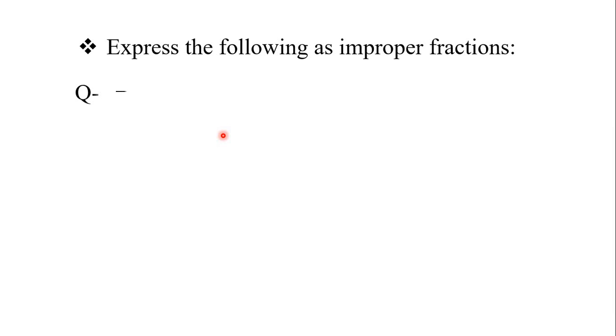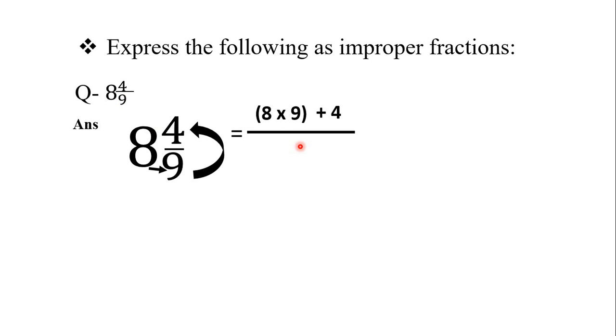Express the following as improper fractions. Ab aapko iska bilkul opposite karna hai. Yarni ab hamay ek mixed number diya gaya hai, jise hamay ek improper fraction me convert karna hai. So let's start. Hum sabse pehle kya karenge? Hum sabse pehle 8 aur 9 ko multiply karenge, aur phir is 4 ko hum add karenge. Denominator me kya aayega? Jo yahan pe denominator hai, wohi hamara denominator me sirf copy hoga. We are not going to calculate any denominators. Yarni ham denominator ko sirf copy paste karte hai.